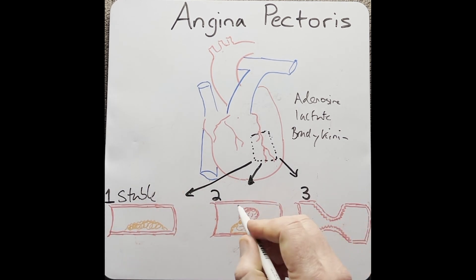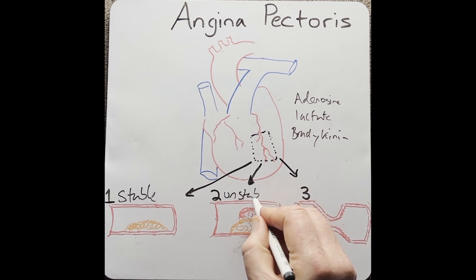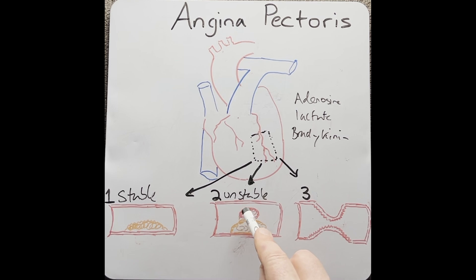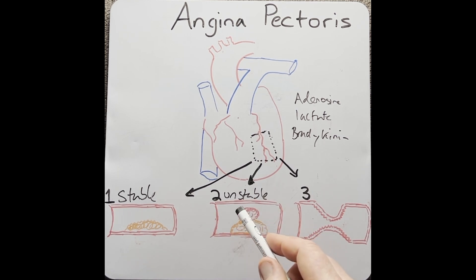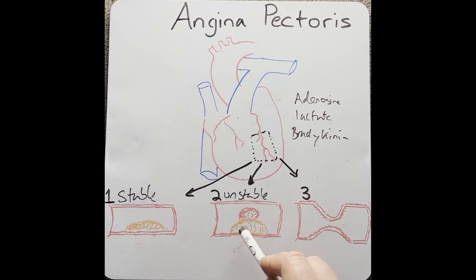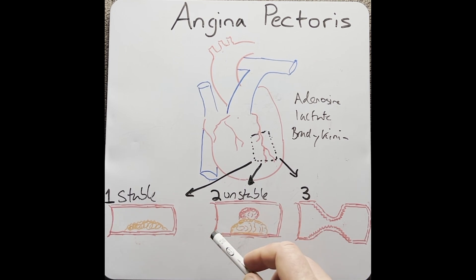Number two is unstable angina. This is also associated with atherosclerotic plaque, but in addition with a thrombus. This makes the chest pain unpredictable. It usually has a greater severity than stable angina. The chest pain is less likely to be associated with exertion, and it's not necessarily relieved by rest.